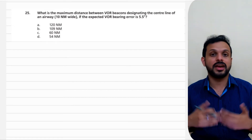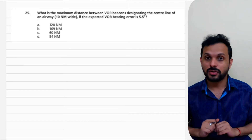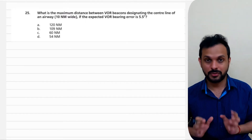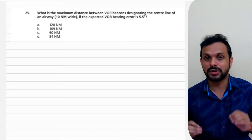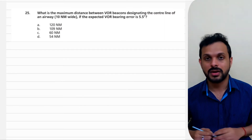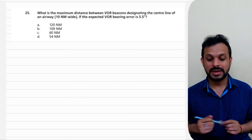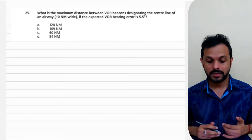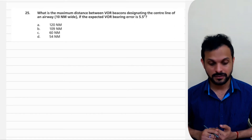In this particular question, we're going to try using both trigonometry and 1-in-60. This question is also a bit confusing with respect to the way it is framed, but it's also a rich question because it has additional information on airways which you probably have come across in your regulation classes. What is the maximum difference between VOR beacons designating the center line of an airway 10 nautical miles wide, if the expected VOR bearing error is 5.5 degrees?